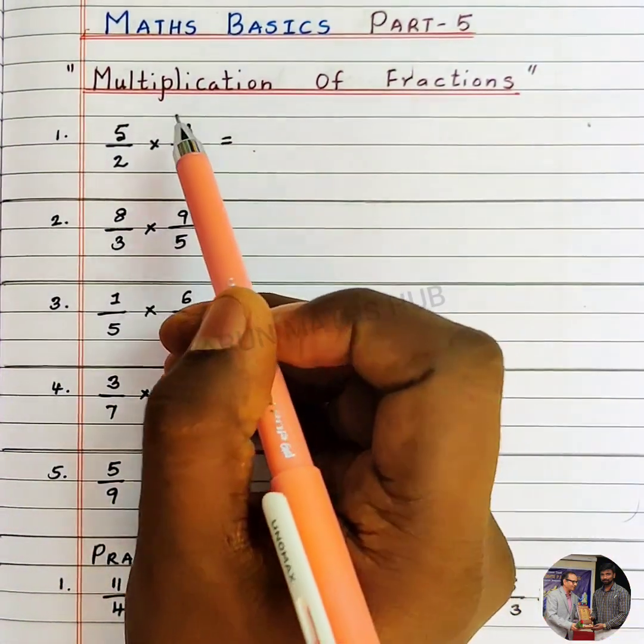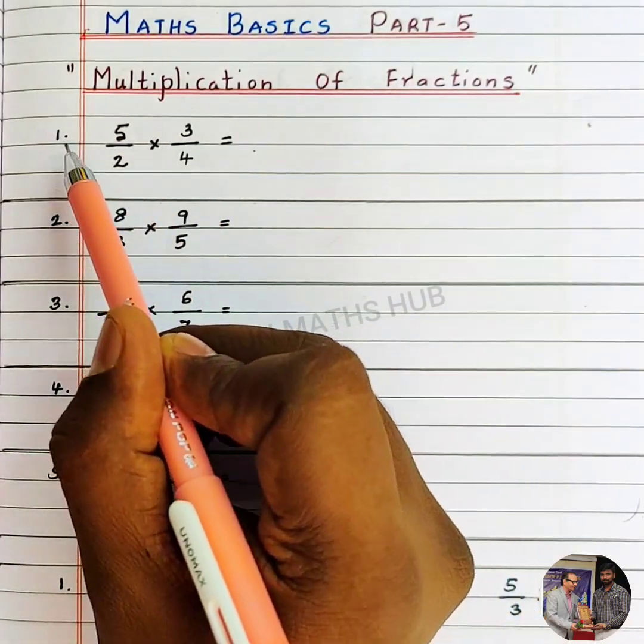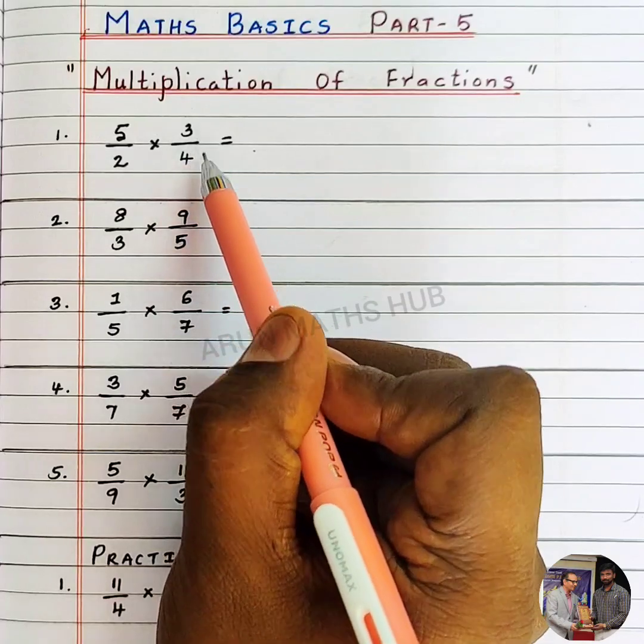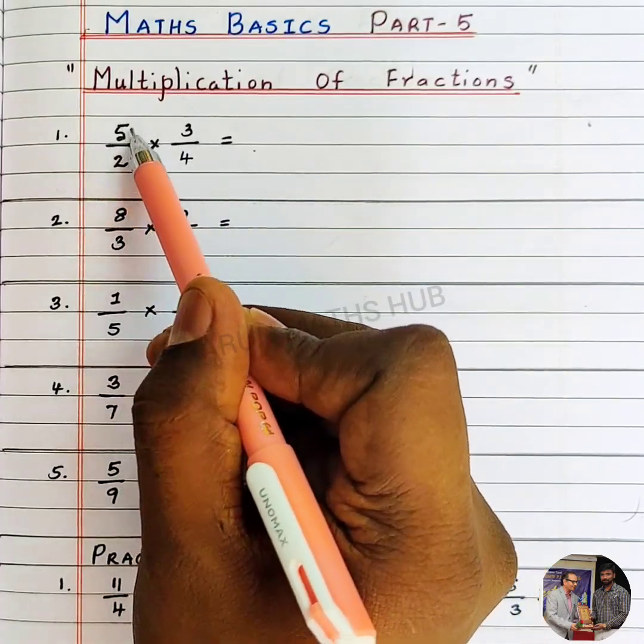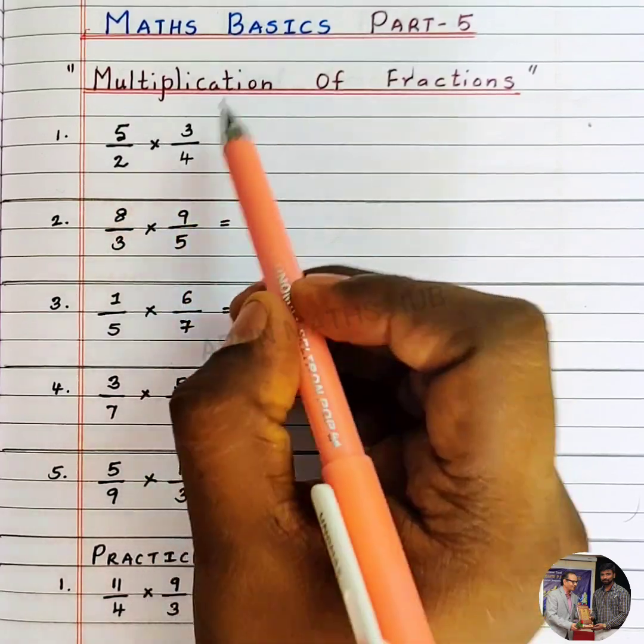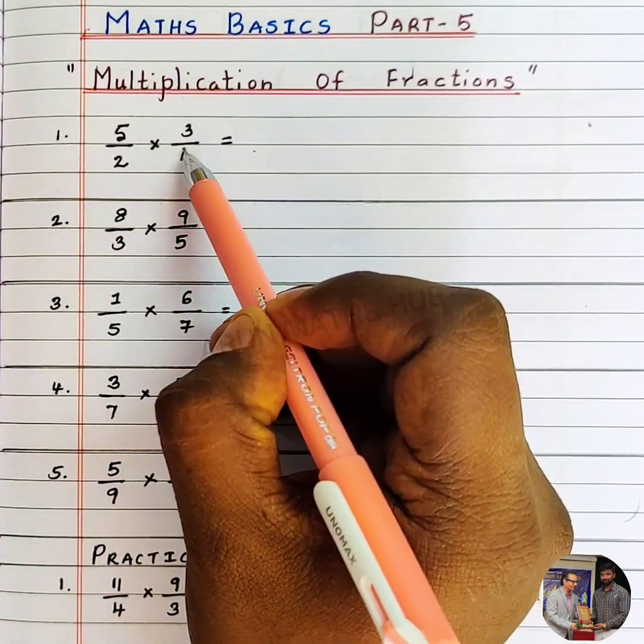We will multiply the numerators. See here, the first fraction is 5 by 2 and the second fraction is 3 by 4. This number is the numerator and it is called as the denominator. Here, 3 is the numerator, 4 is the denominator.